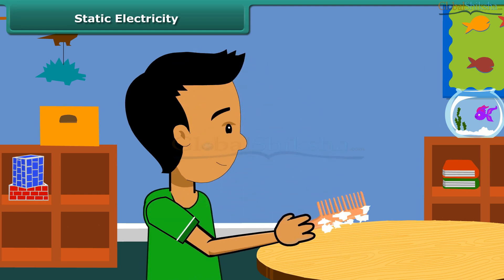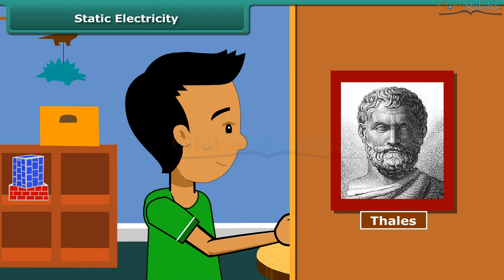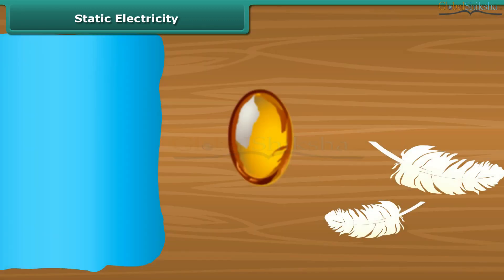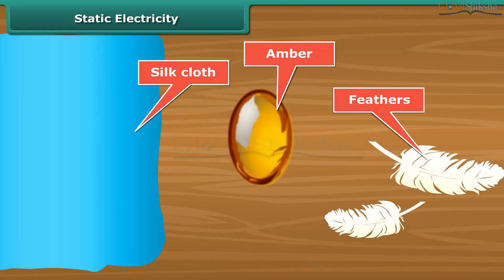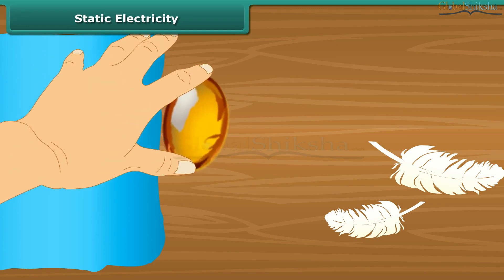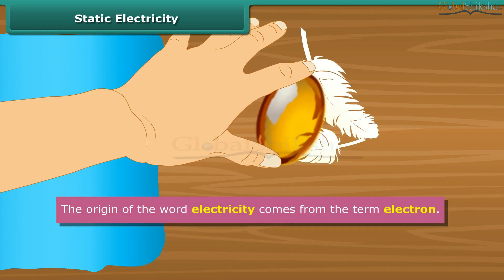When we comb our hair with a plastic comb and take it near small pieces of paper, the paper pieces are attracted toward the comb. We then say the comb is charged with electricity. This was first noticed by a Greek man named Thales over 2,500 years ago. Thales found that amber attracted tiny feathers after it was rubbed with silk cloth. This was due to static electricity. The origin of the word electricity comes from the term electron.